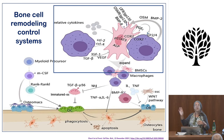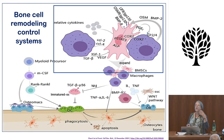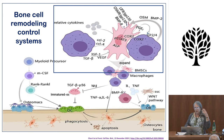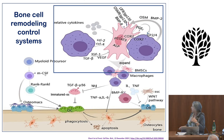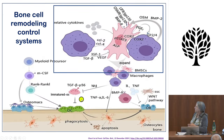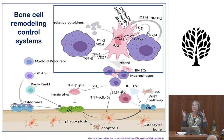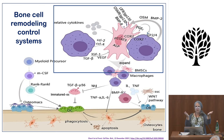I put this complex slide up mostly to show that we now understand this is a very complicated system, much more so than originally thought. The most important thing is that bone constantly remodels — it's not a static organ. It's constantly being broken down by cells called osteoclasts, and constantly being built back up by cells called osteoblasts. We're going to talk a lot about the balance between what osteoclasts and osteoblasts are doing.